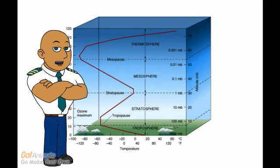The last layer is the thermosphere that starts at 80 kilometers above the Earth's surface. Temperatures can reach 1500 degrees Celsius. Satellites orbit the Earth in the thermosphere.